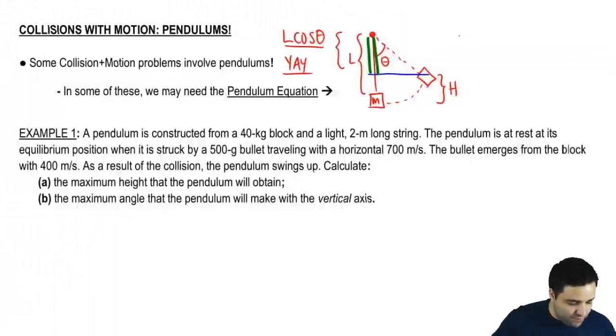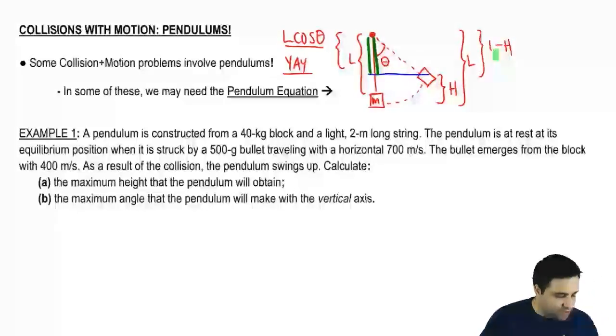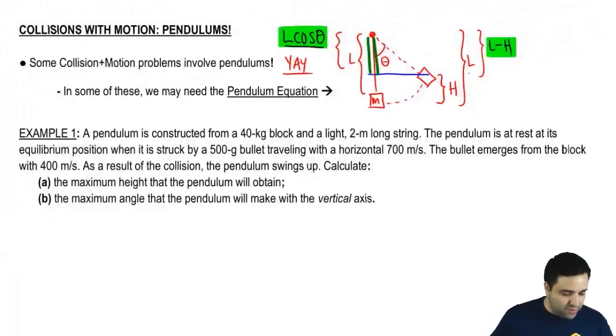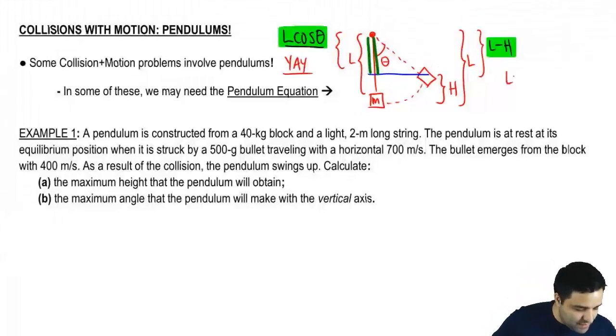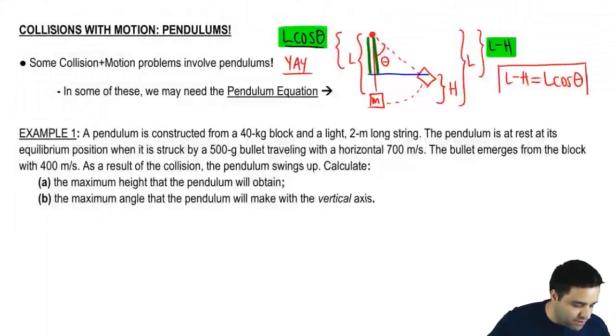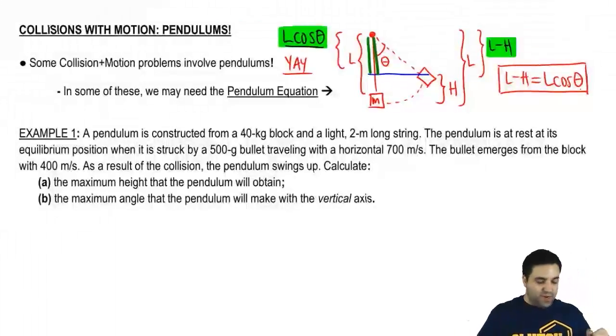Another expression I can write is if this is H, just this piece, and the whole thing is L, then this piece here is going to be L minus H. So these are the two expressions, L minus H and L cosine of theta. So let's put them together. It's the same. It's two expressions for the same piece. So I can say that L minus H equals L cosine of theta. This is the pendulum equation.